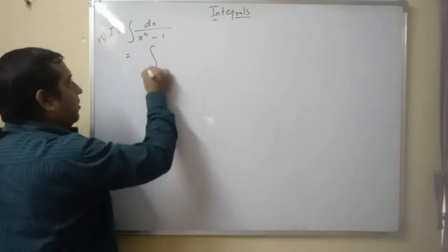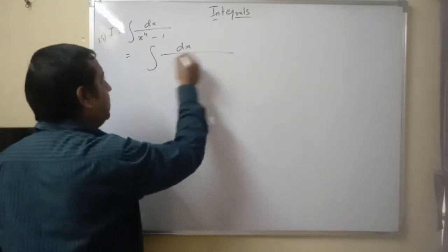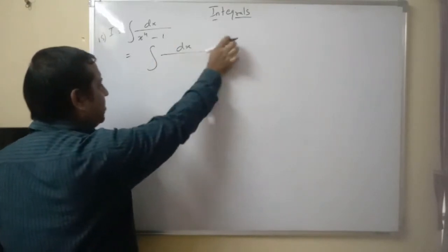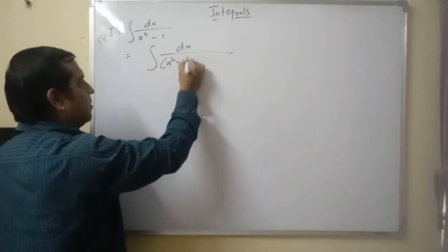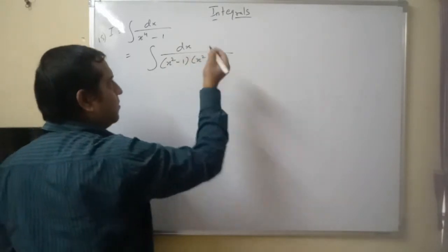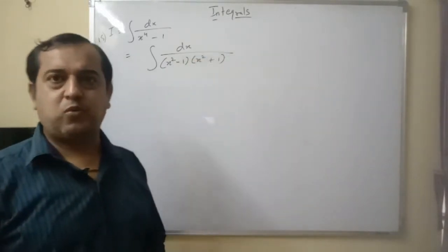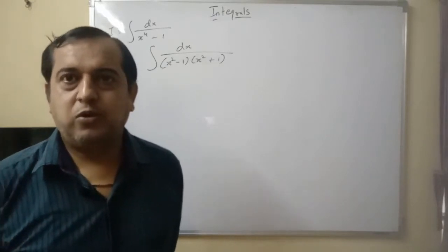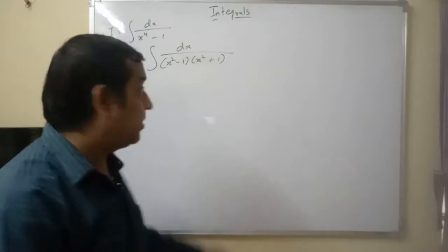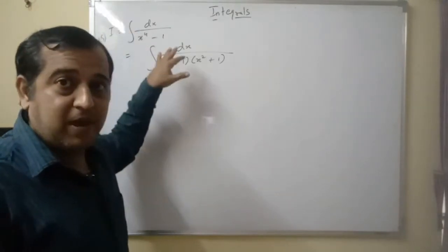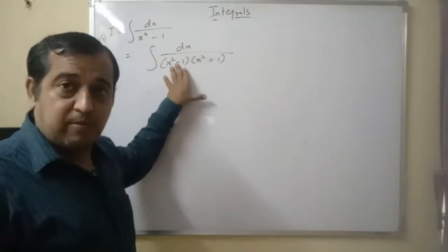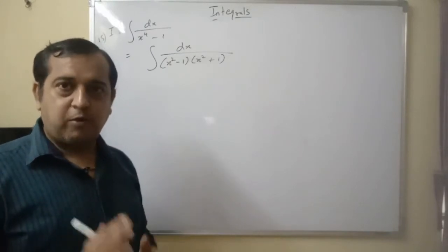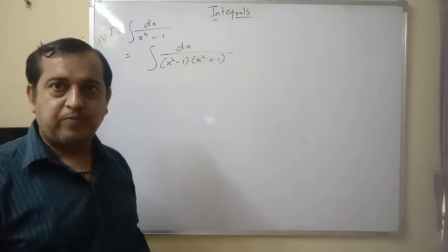Now, what we will do? This is equal to integral dx upon, in the denominator, you have x square minus 1 into x square plus 1. x square minus 1 can also have 2 factors. You can take it as x minus 1 into x plus 1. This same formula we applied to x raise to 4 minus 1. The same formula we can apply to x square minus 1. Clear?